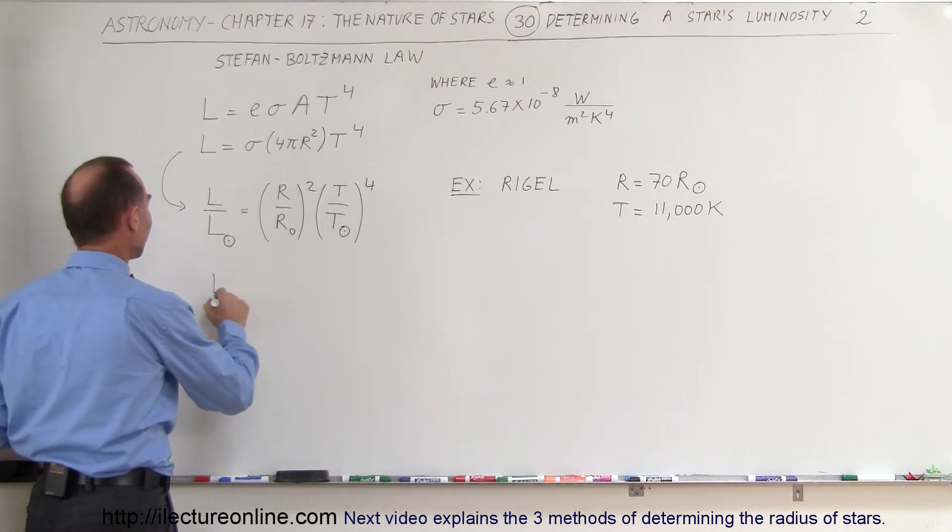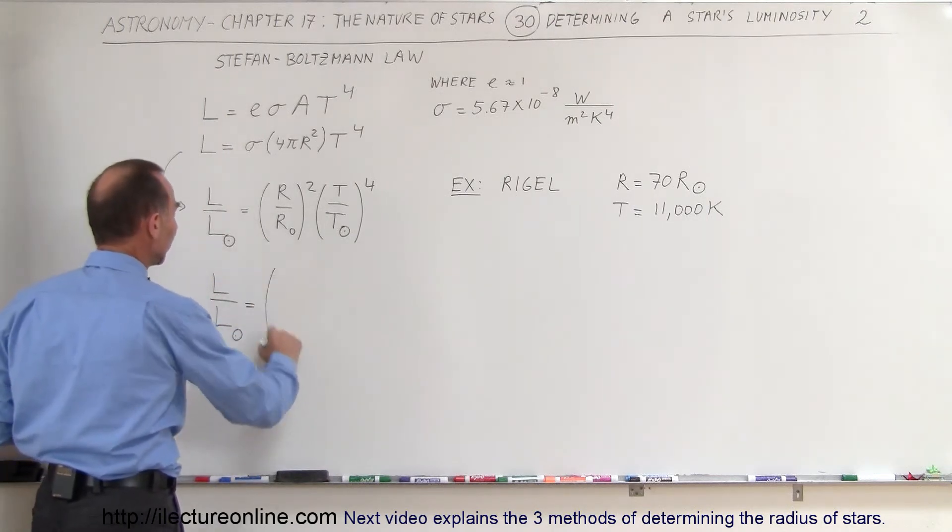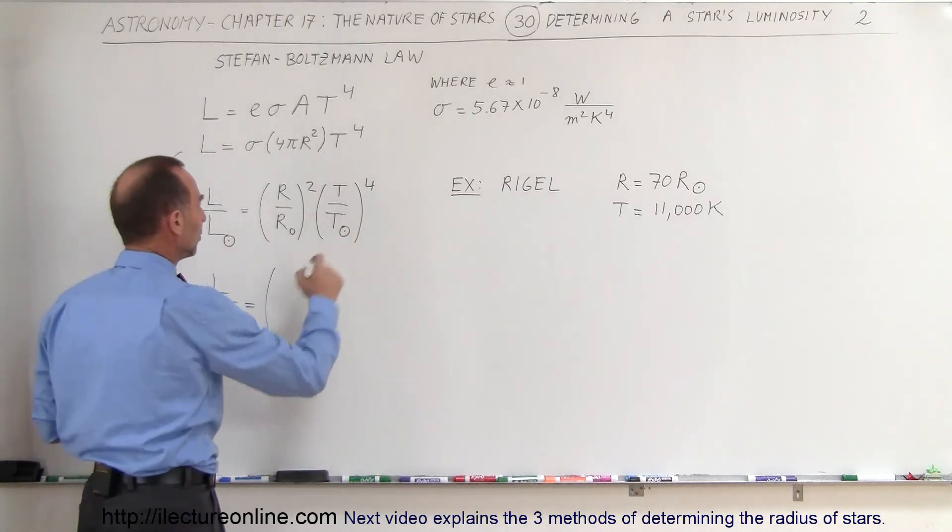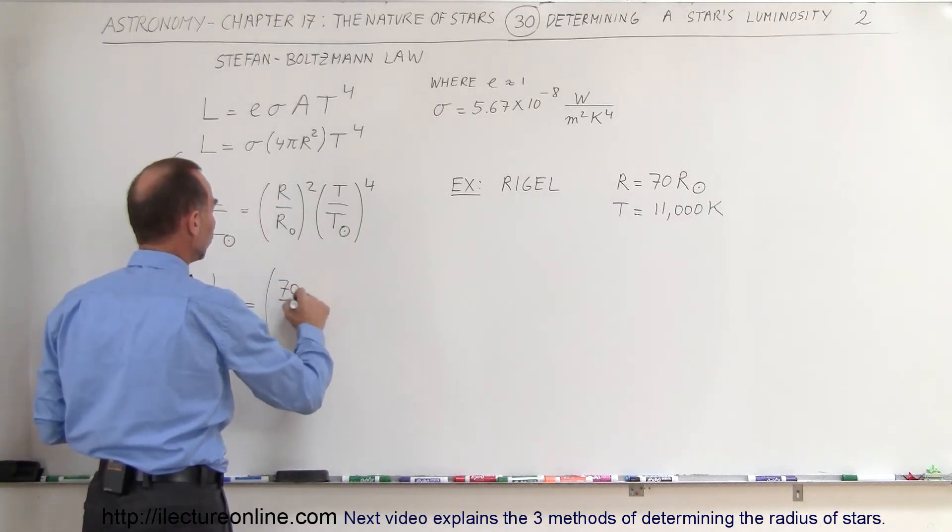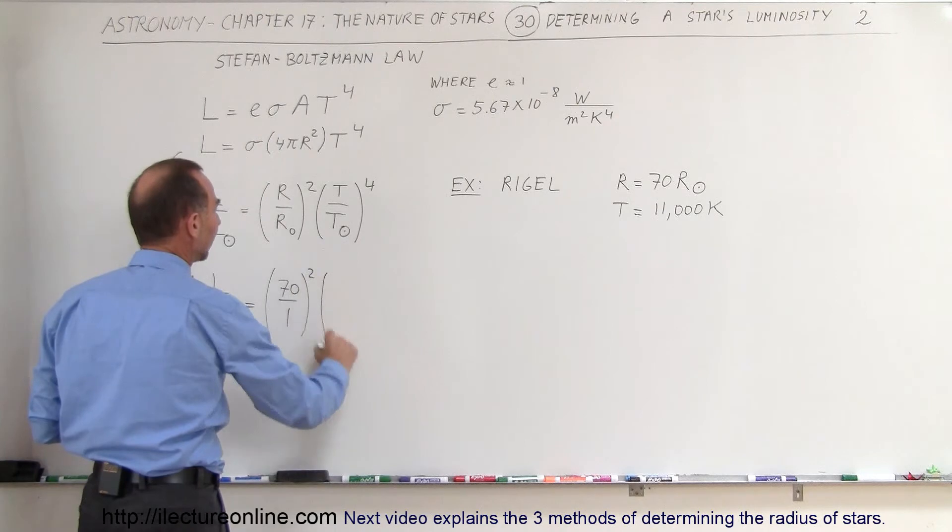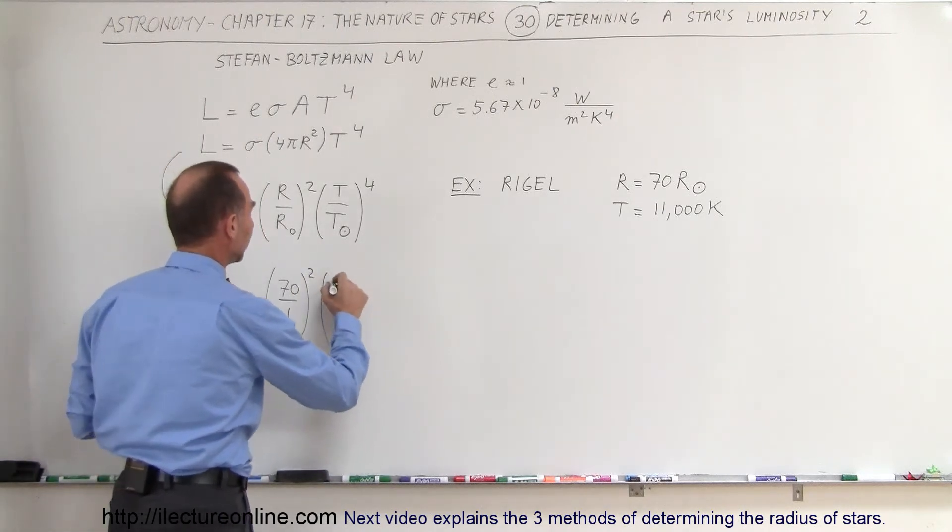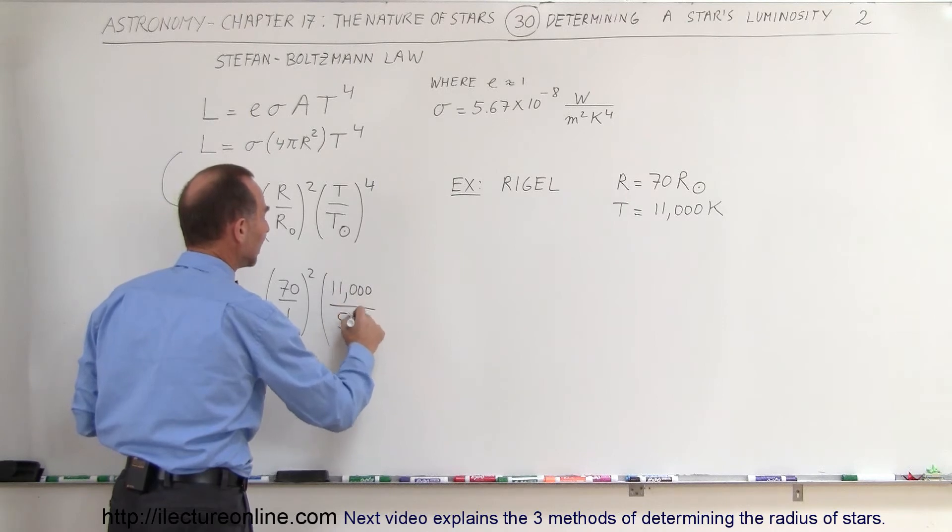The ratio of the luminosity divided by the luminosity of the sun is equal to the ratio of the radii. So the ratio would be 70 to 1, quantity squared. And the temperature for Rigel is 11,000 and the temperature for the sun is about 5,800.